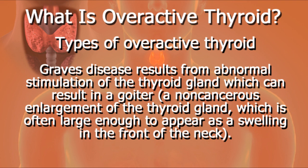There are several different types of overactive thyroid. Graves' disease results from abnormal stimulation of the thyroid gland, which can result in a goiter. Goiter is a non-cancerous enlargement of the thyroid gland, which is often large enough to appear as a swelling in the front of the neck.